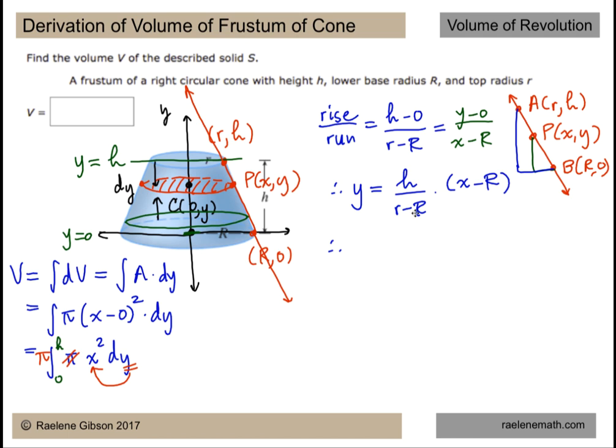But we need to eliminate x so I'm going to multiply by the reciprocal and then add R to the other side. So x is equal to big R plus the reciprocal of the slope multiplied by y. We're going to take that expression and substitute it into the integral to work out the volume.